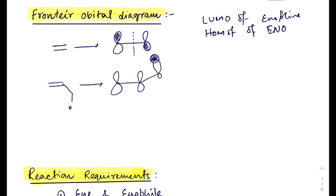The HOMO of the ene involves a sigma bond with hydrogen. This is the carbon and this is the sigma bond, and there is also a pi bond. This is the HOMO and this is the LUMO. The interaction here and the interaction there — this kind of interaction favors the reaction.